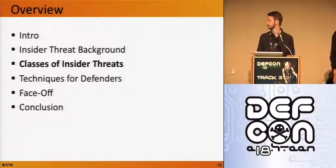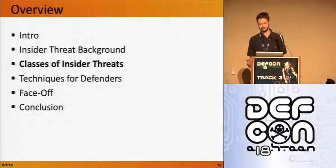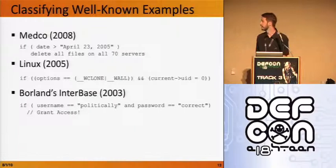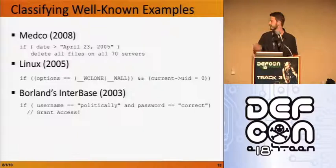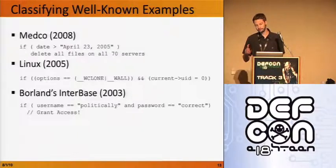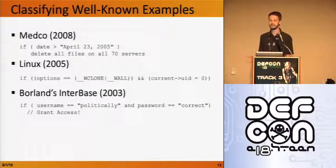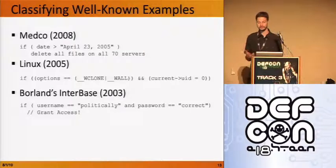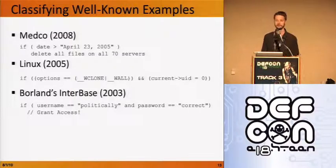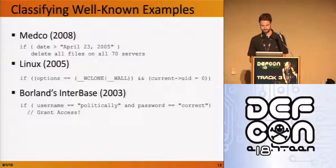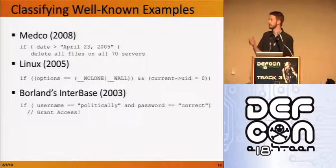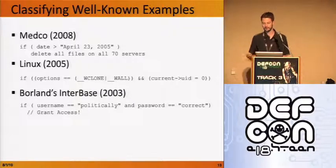There are numerous ways to classify insider threats. I'll go through a couple of examples. First, the Medco case: after a particular date and time, it deletes all files on 70 servers. We can classify this as a very destructive insider threat, high risk for the business — it means downtime, no business. It's also trivial to write. Depending on where this code lands in the application, it's an auto-trigger — you just wait until a certain date arrives and it executes.